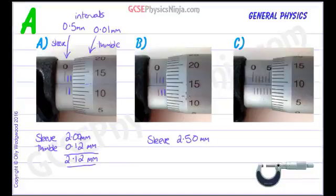Now we go to the thimble and we see that we've got 10, it looks like 14 there. So that's 14 hundredths of a millimeter, 0.14 millimeters. That's the thimble reading. Add them together, what do we get? 4, 6, and 2. 2.64 millimeters.